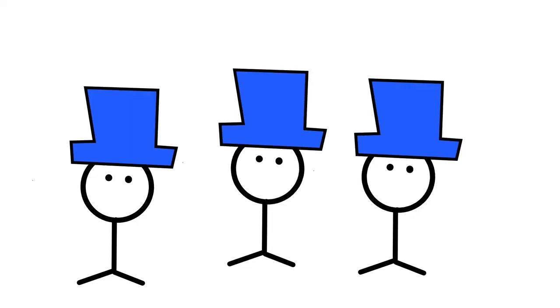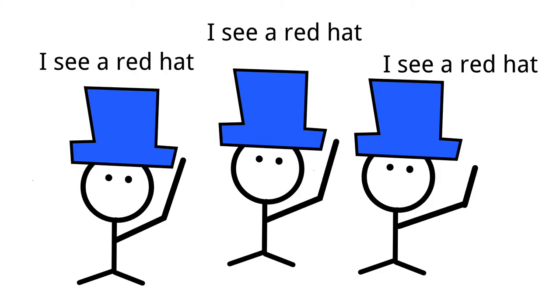The first information we'll use is that everyone raised their hand. With three people, there are four possible cases: zero, one, two, or three red hats. Let's start with zero red hats — meaning everyone wears blue hats. That's impossible because if everyone wore blue hats, everyone would see two blue hats and nobody would raise their hand. But we know everyone raised their hand — contradiction. So zero red hats is impossible.